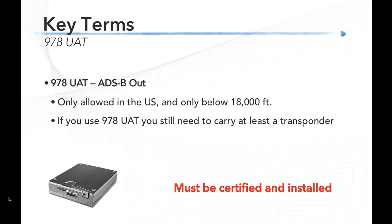Moving on to the 978 UAT — this is only allowed in the U.S. and only below 18,000 feet. If you equip with a 978 MHz UAT, you still need to carry at least a Mode C or S transponder. There are two primary reasons: first, the radar system depends on listening to 1090 transponders — secondary surveillance radar depends on that. Second, most large aircraft have TCAS, which can see you air-to-air, and both secondary surveillance radar and TCAS require you to have a 1090 transponder. So if you equip with 978, you'll actually have two transponders.